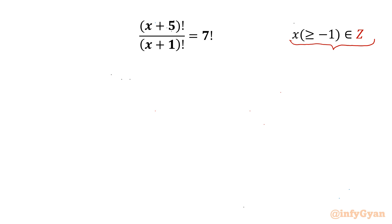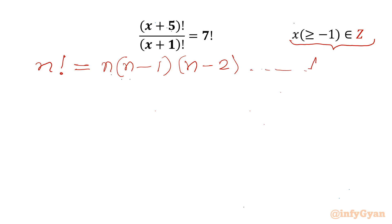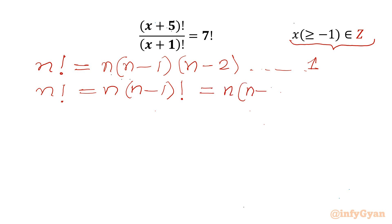Let's get started by writing the factorial formula first. n factorial is the product of all natural numbers from 1 to n. We can write it as n times (n-1) times (n-2) up to 1. The recursive formula gives us n! = n times (n-1)!, or n times (n-1) times (n-2)!, and so on.